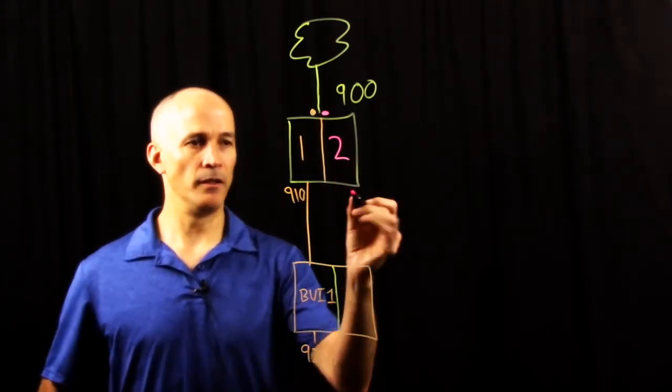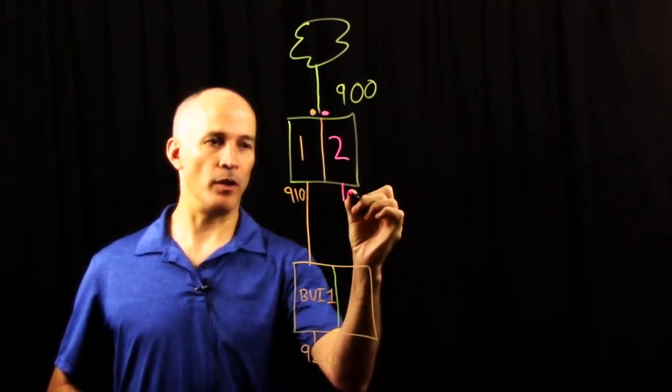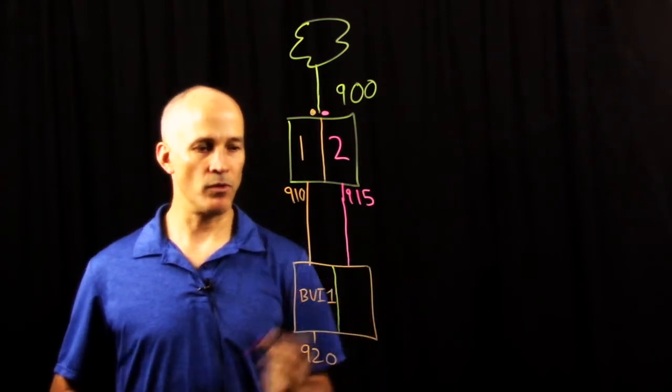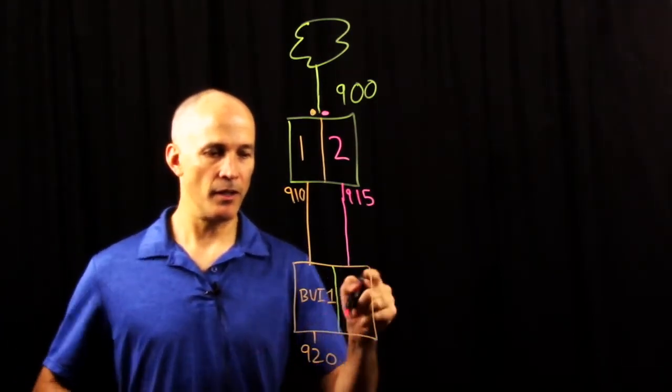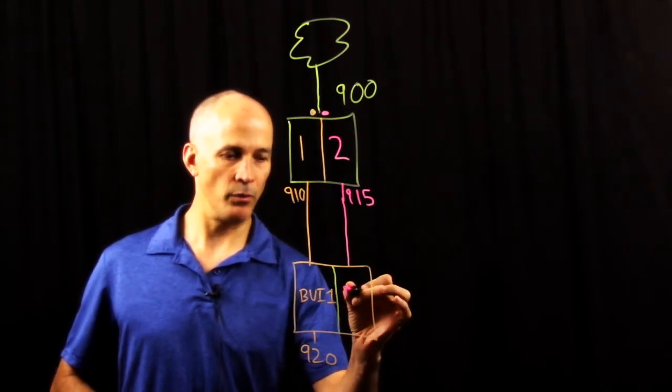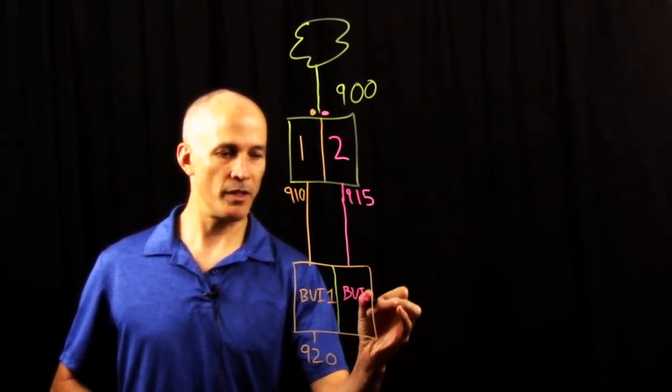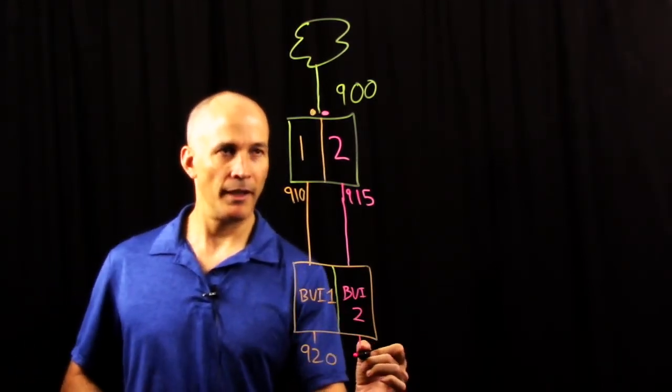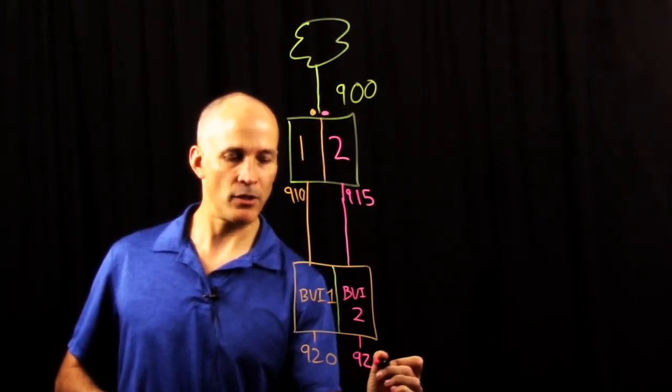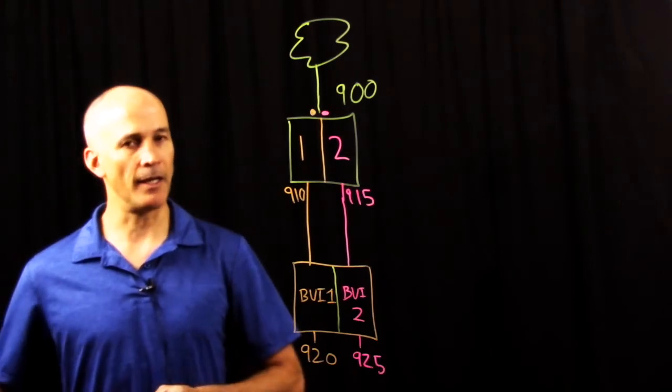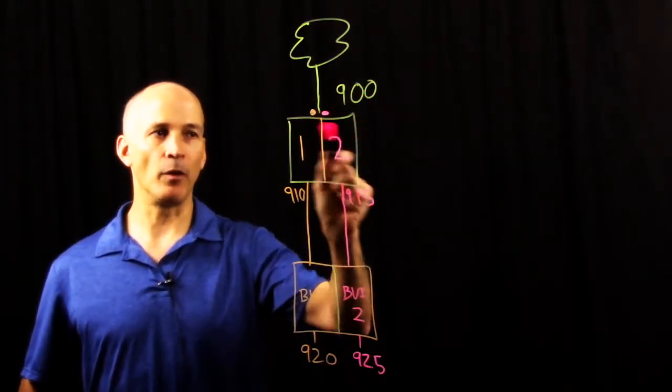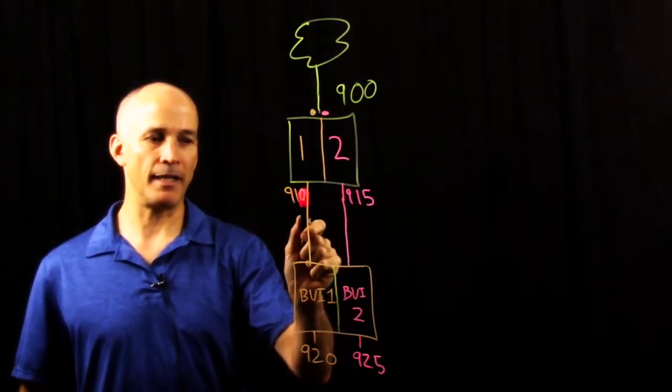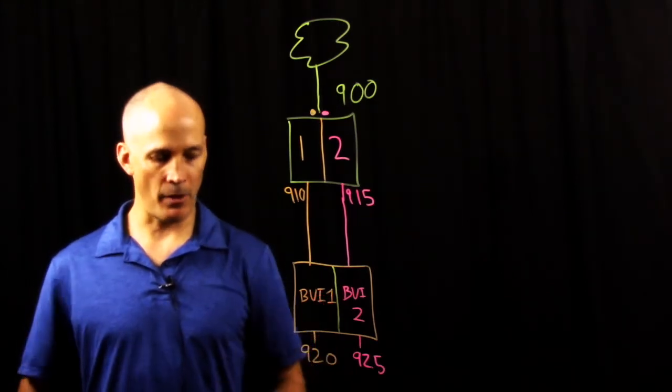For context two, it's going to drop its packets off on a different interface. In this case, we'll call it 915. Those packets will be fed into a firepower threat defense cluster. This would go through on firepower threat defense. We would take in packets on BVI two, and BVI two is cross-connected over and it will drop its packets on the inside after we implement policy on VLAN 925. So packets come in on 900, depending on which context they're headed to, either context one, they'll exit the ASA on VLAN 910, go through BVI one on firepower threat defense.